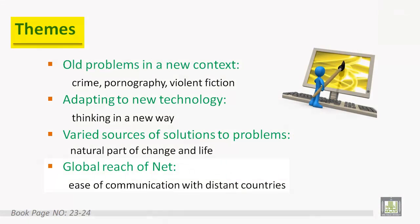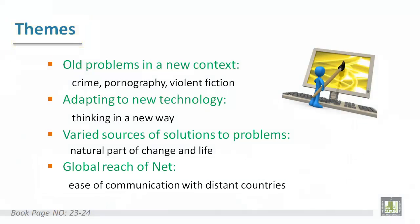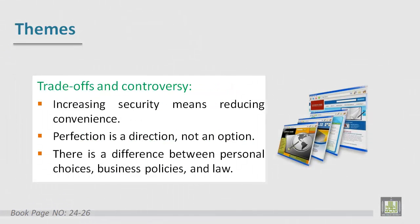Another theme is the global reach of the net. The ease of communication with distant countries has profound social, economic, and political effects — some beneficial, some not. There are also trade-offs and controversy: increasing privacy and security often means reducing convenience, and protecting privacy makes law enforcement more difficult.